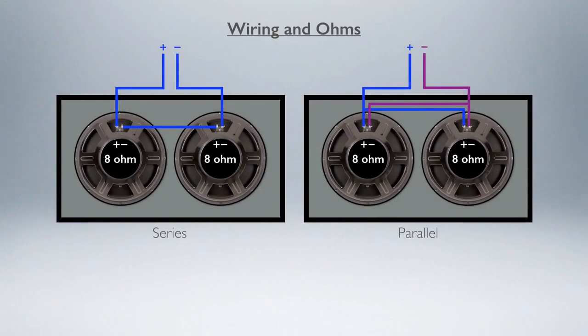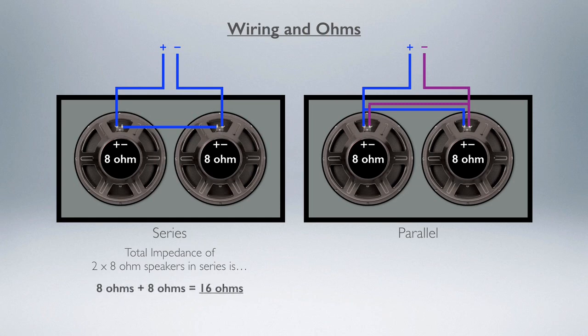So here's how we work out the ohms of these various cabinets. We have series and parallel, both having two 8-ohm speakers. To calculate the impedance of something in series, the total impedance of two 8-ohm speakers in series is 8 ohms plus 8 ohms—it's 16 ohms.